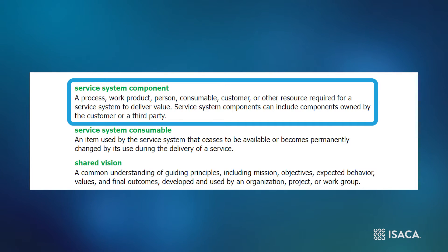Service system components can include components owned by the customer or a third party. This is an important point to be aware of when discussing the practices of SDM. Service systems consist of various items such as people, processes, and tools, all of which collectively combine to enable organizations to deliver their services to their customers. A service system is not just a collection of IT infrastructure.